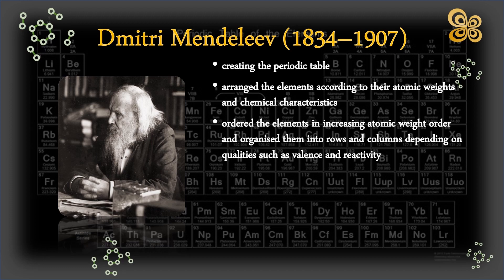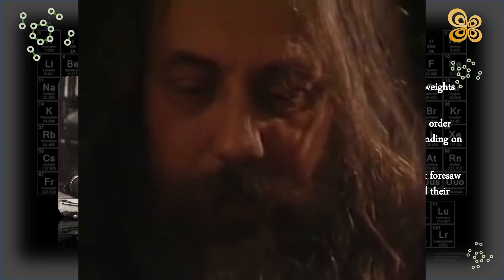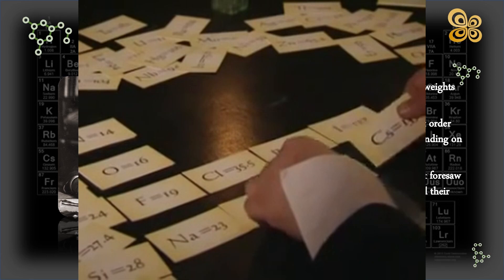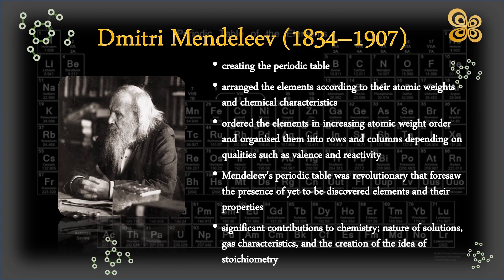Mendeleev's periodic table was revolutionary, since it not only systematically arranged the elements, but also foresaw the presence of yet-to-be-discovered elements and their characteristics. He anticipated the presence and properties of certain elements, such as germanium, gallium, and scandium, which were eventually discovered and confirmed to fit his predictions. Mendeleev also made significant contributions to chemistry, including studies on the nature of solutions, gas characteristics, and the creation of the idea of stoichiometry. His work provided the groundwork for modern chemistry and has had a tremendous impact on our understanding of the natural world.